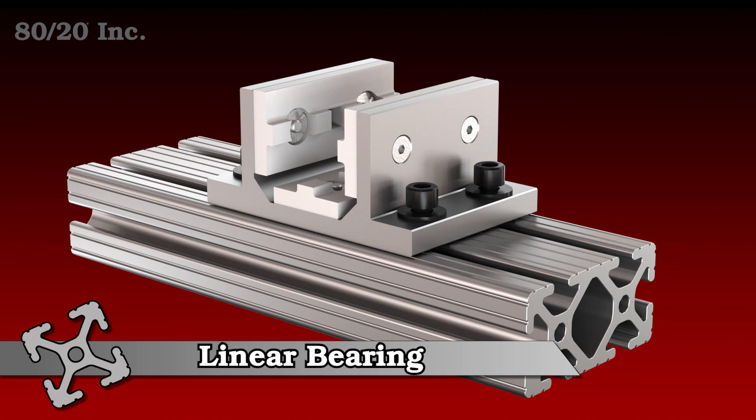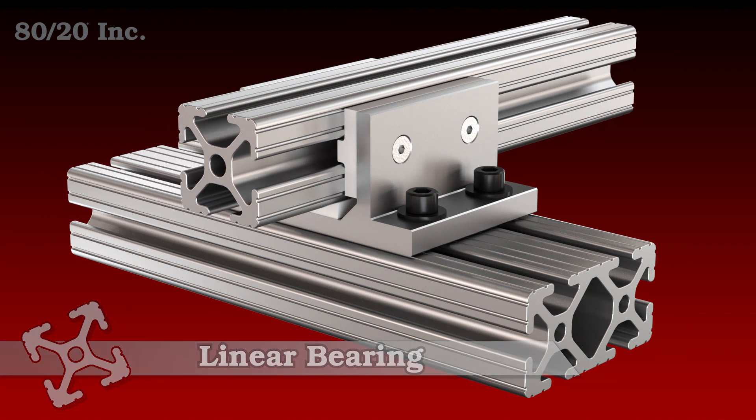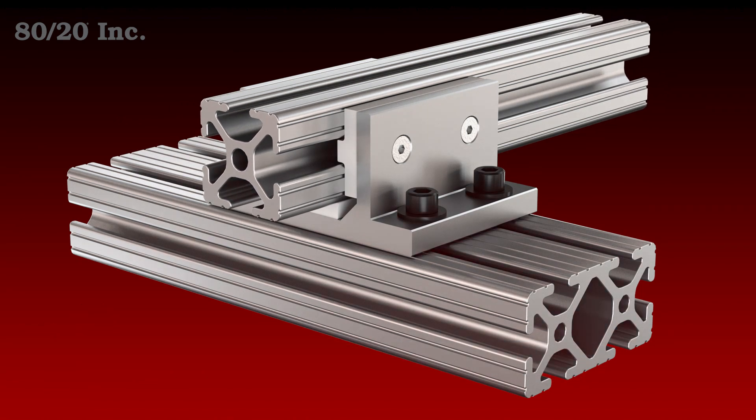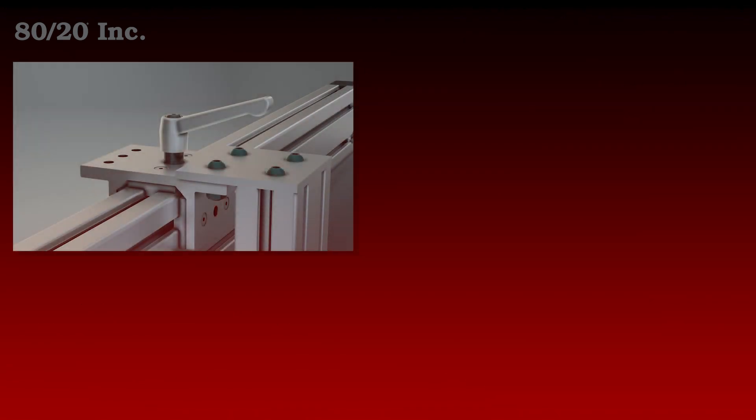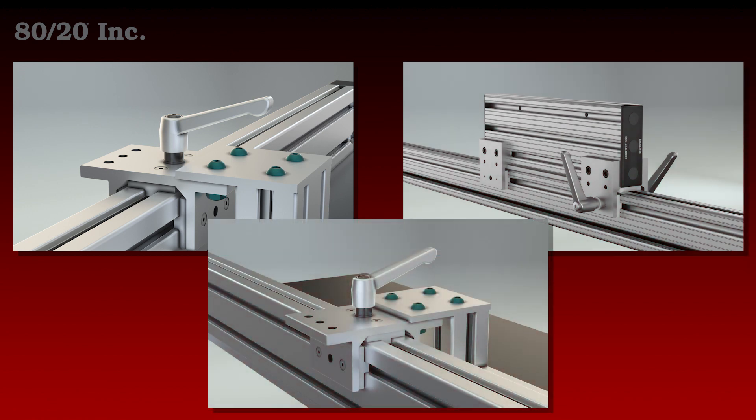They're available in both fractional and metric systems and compatible across a wide range of profile series. They come pre-assembled with extra shims and are available in both single and double styles. Keep in mind that these bearings are designed for compression loads only and are not intended to support hanging loads.